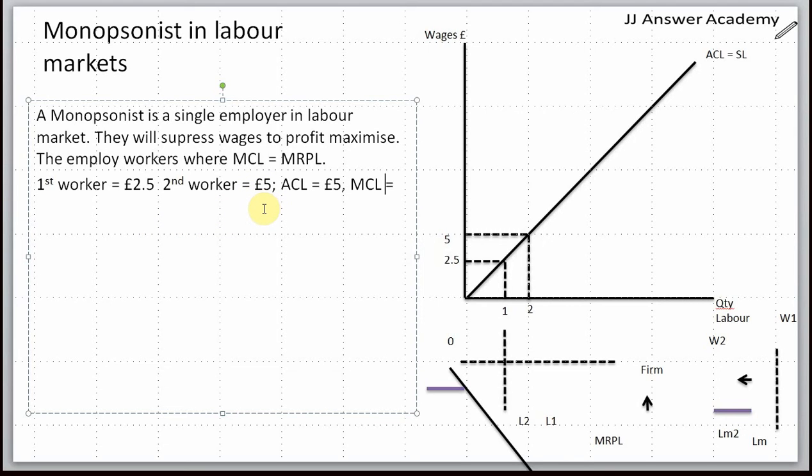So what is the total wage bill? Ten pounds. For the second worker, when you employed the first worker the total wage bill was 2.5, but for the second worker because you're paying both workers five pounds each it's ten pounds. The marginal cost of labor would be seven point five pounds.